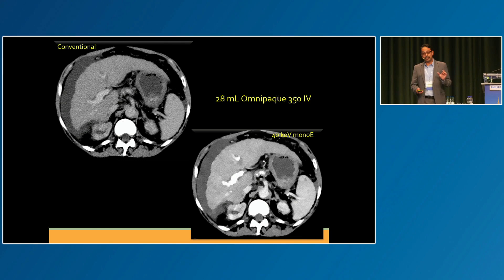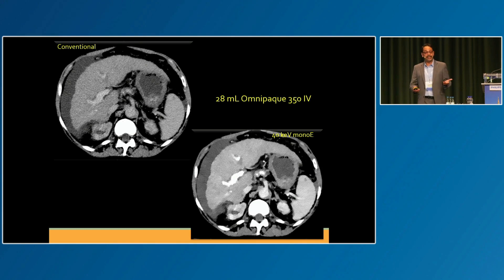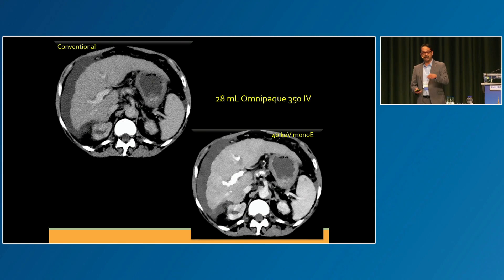Reducing contrast dose was a niche application — nobody particularly cared about it until about six weeks ago when we ran out of contrast in the United States. We started doing a lot of ultra-low dose scans with, in this example, 28 ml of OmniPaque. A lot of institutions in the US were cancelling or postponing outpatients. We did not cancel one scan. We scanned every one — we just saved our contrast by using ultra-low dose protocols.